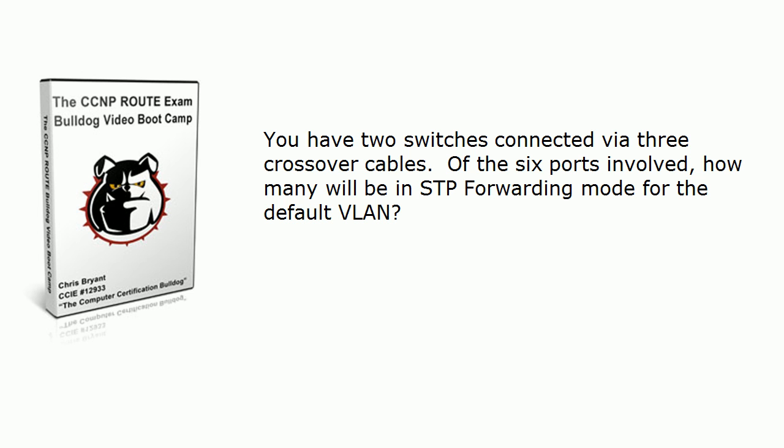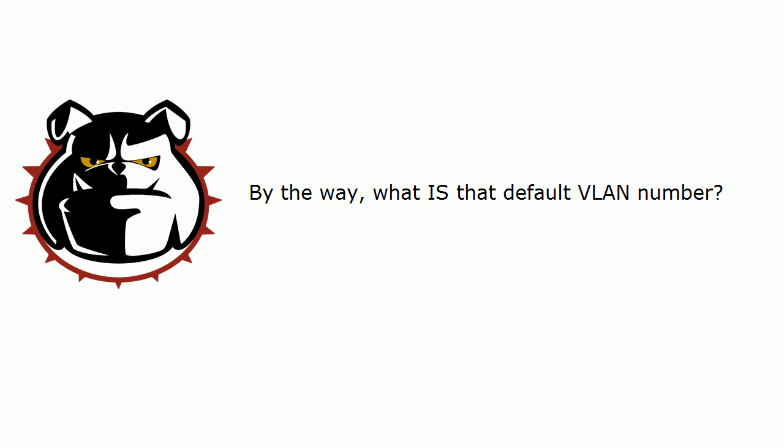Some of the questions today are multiple choice, but this isn't one of them. You've got two switches connected via three crossover cables, so we know we've got six ports involved overall. How many of those ports are going to end up in forwarding mode for the default VLAN when we're done? And by the way, what is that default VLAN number? You've got to know that one.